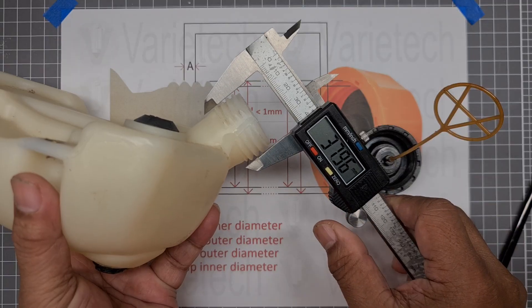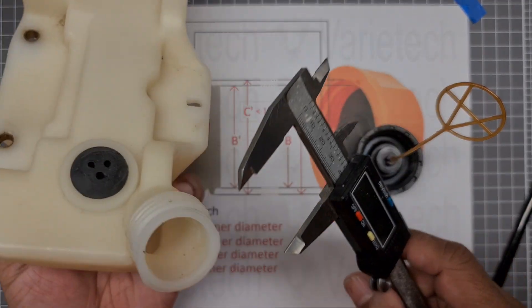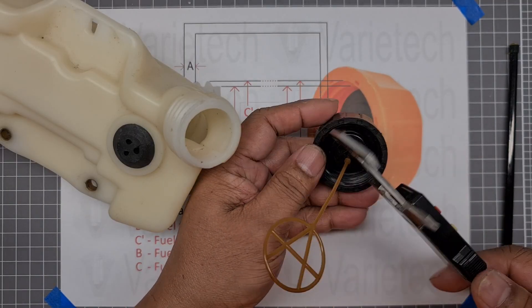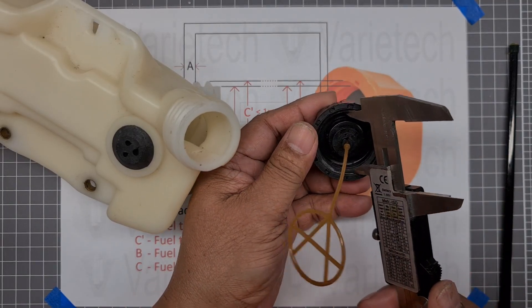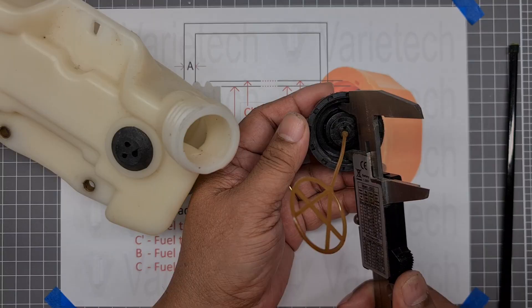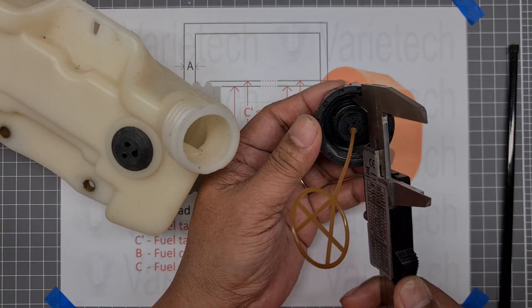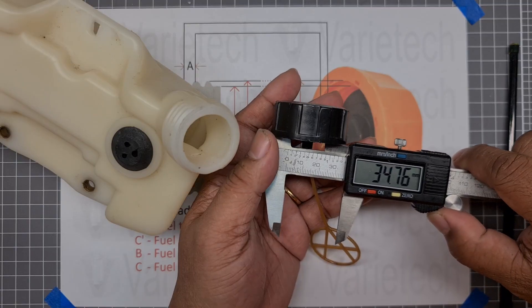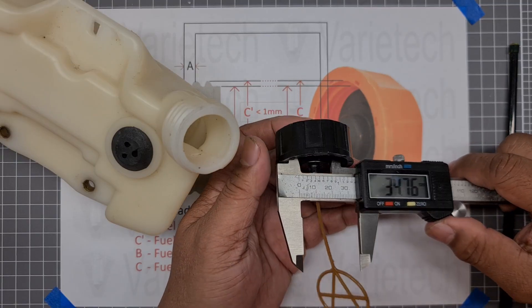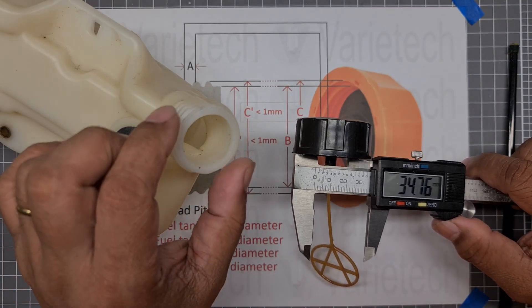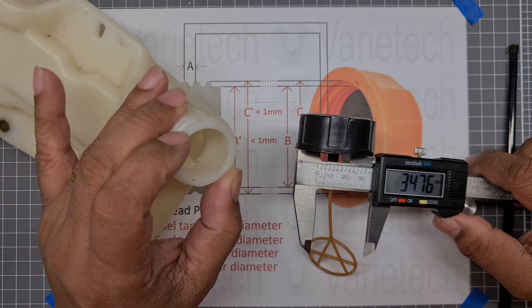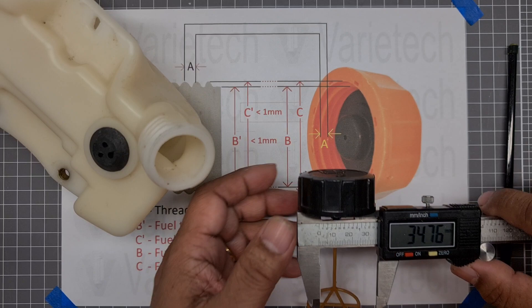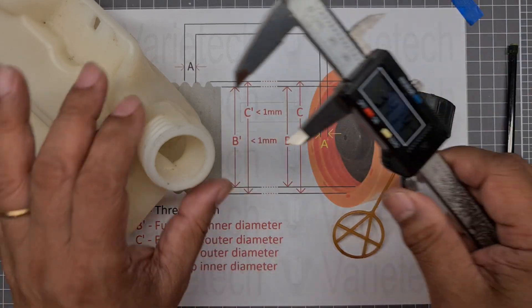So now we measure the outer diameter of the fuel cap, which is on the tip of the thread. So we measure the inner diameter from here, from the inside. So we have 34.76. So what would be the inner diameter of the fuel tank? That would be around 33.7. So we measure the inner...